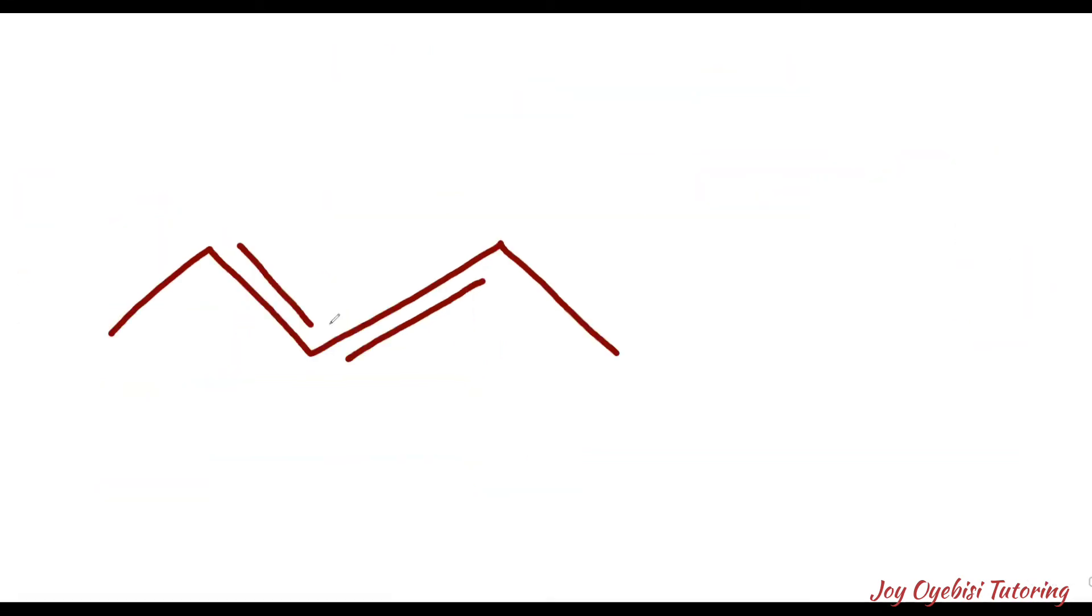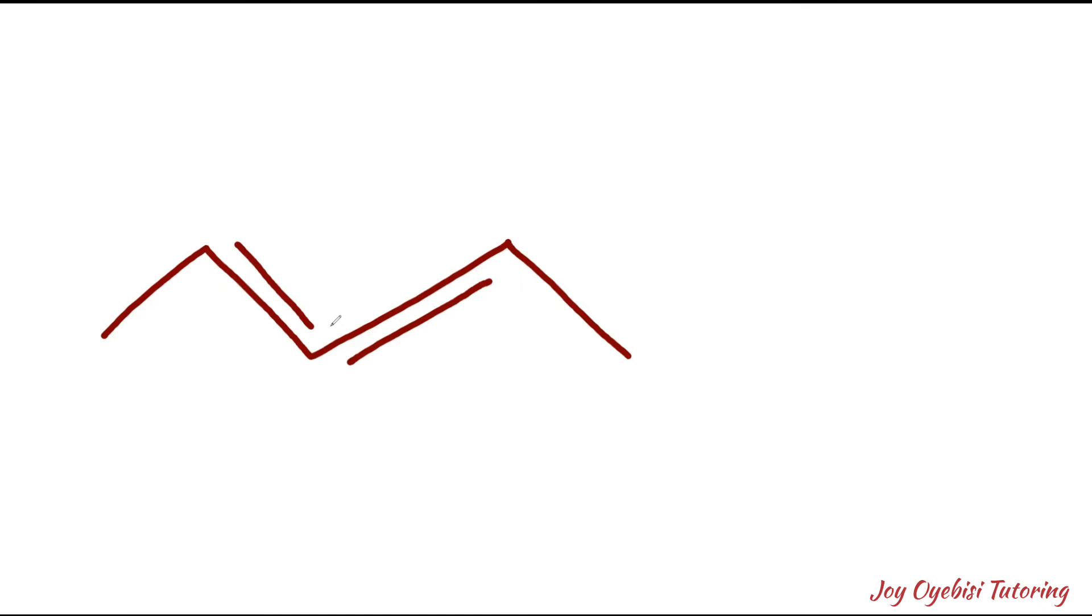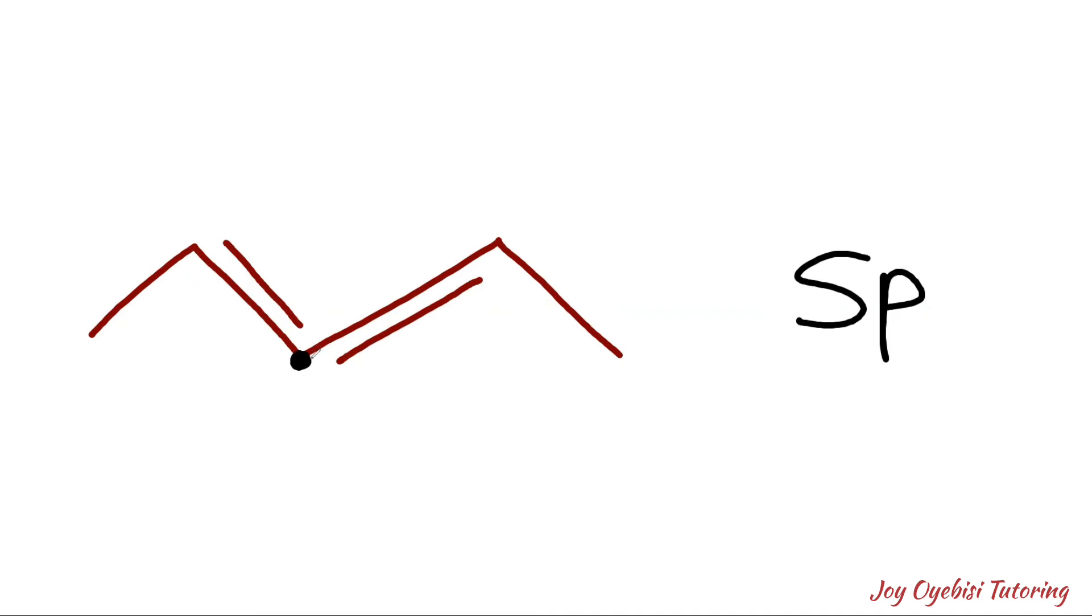This is called cumulated dienes. If you have something like this, the carbon in the middle here is going to also be sp hybridized. It's not just a double bond, you have more than that. So it's going to be sp hybridized. So take note of that.